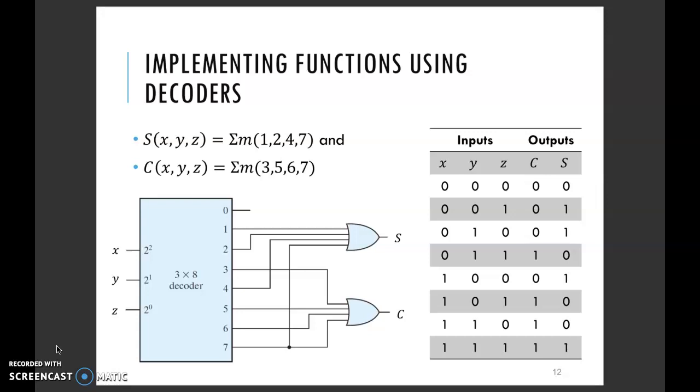So what you're going to do is sketch a rectangle depicting your 3 by 8 decoder. You're going to have your 3 input variables x, y, and z input to the decoder.